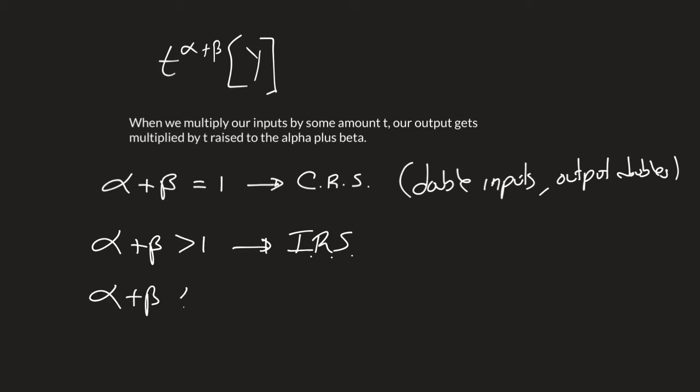We could also have alpha plus beta less than one, which would be decreasing returns to scale, meaning that when I multiply my inputs by t, my output is multiplied by less than t. So if I double my inputs, my output less than doubles.